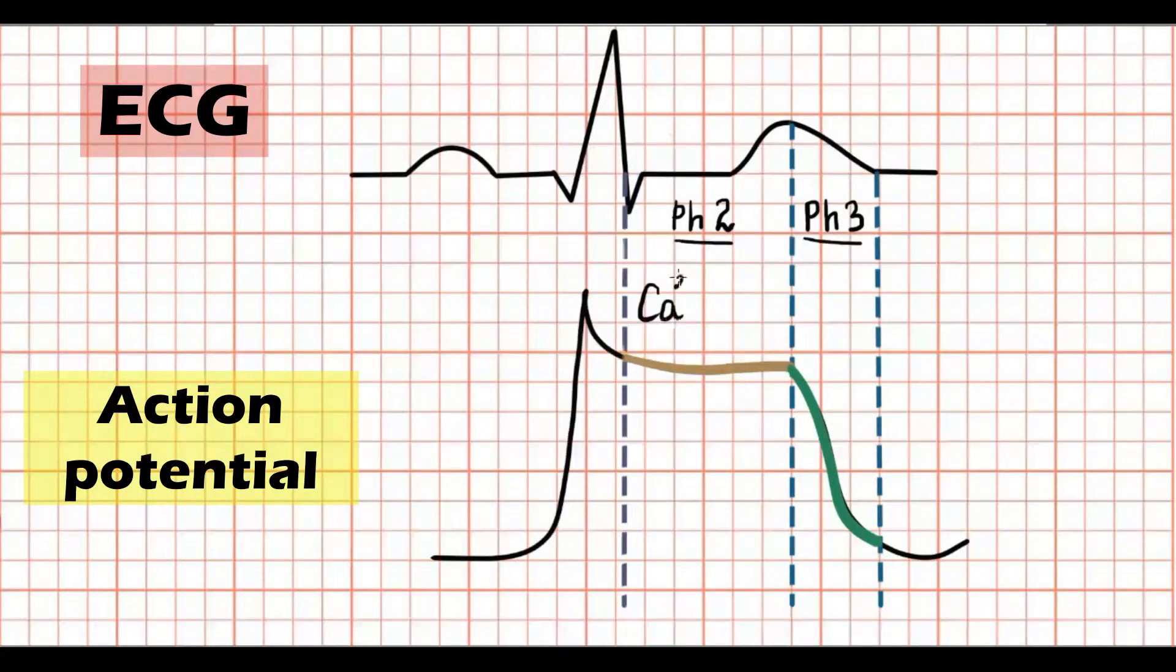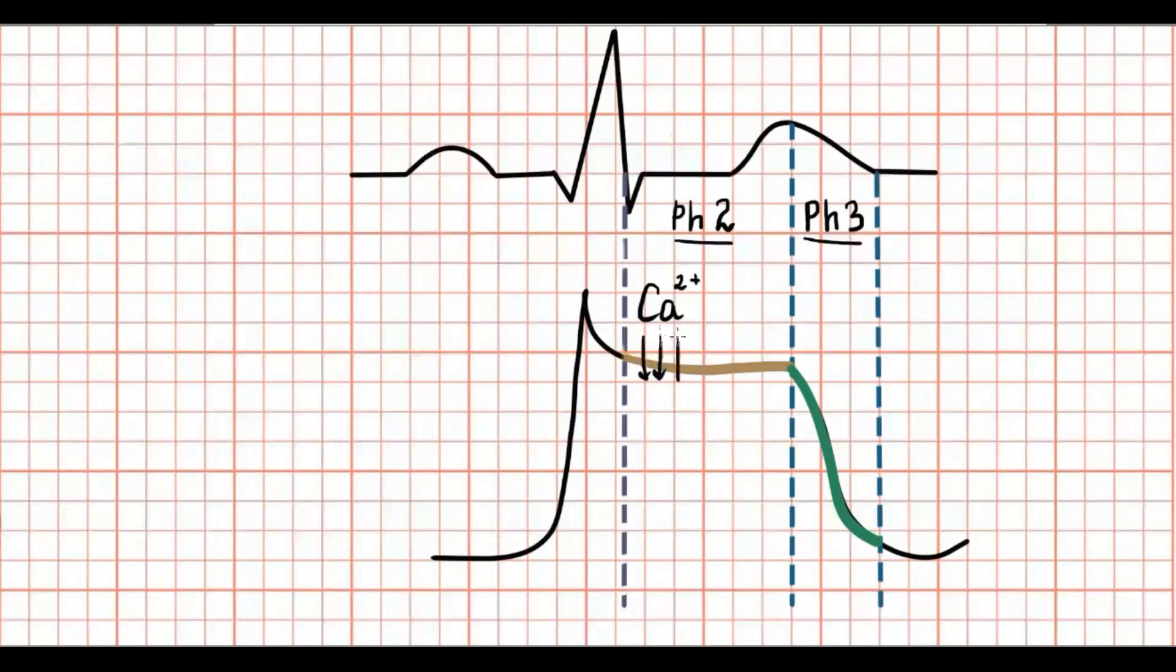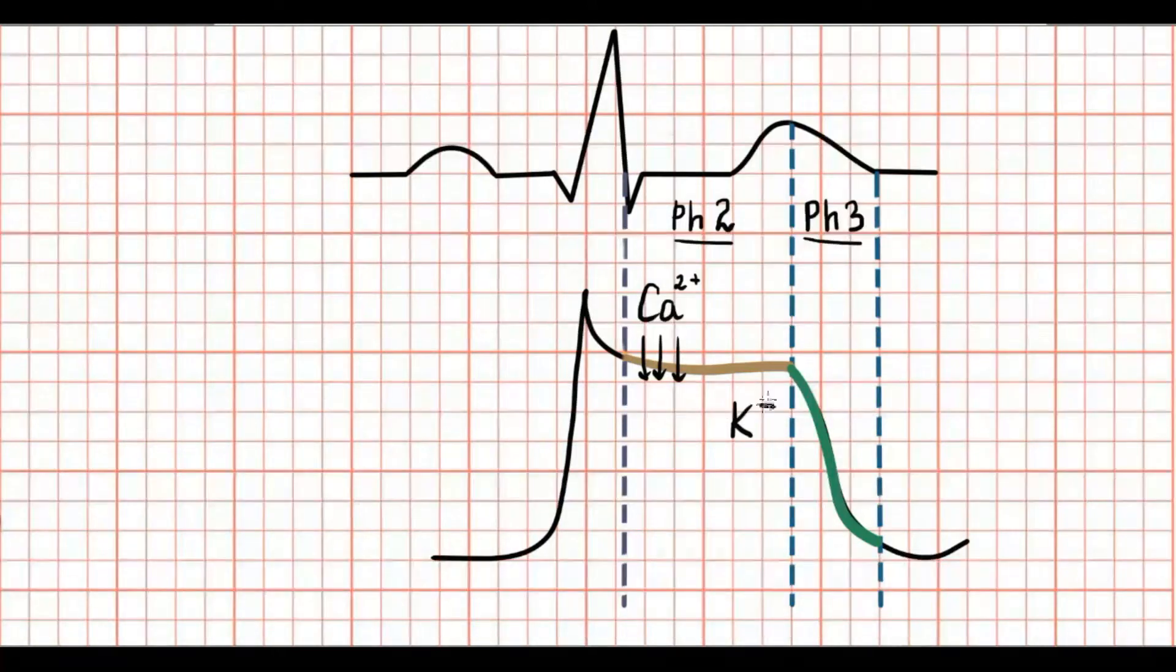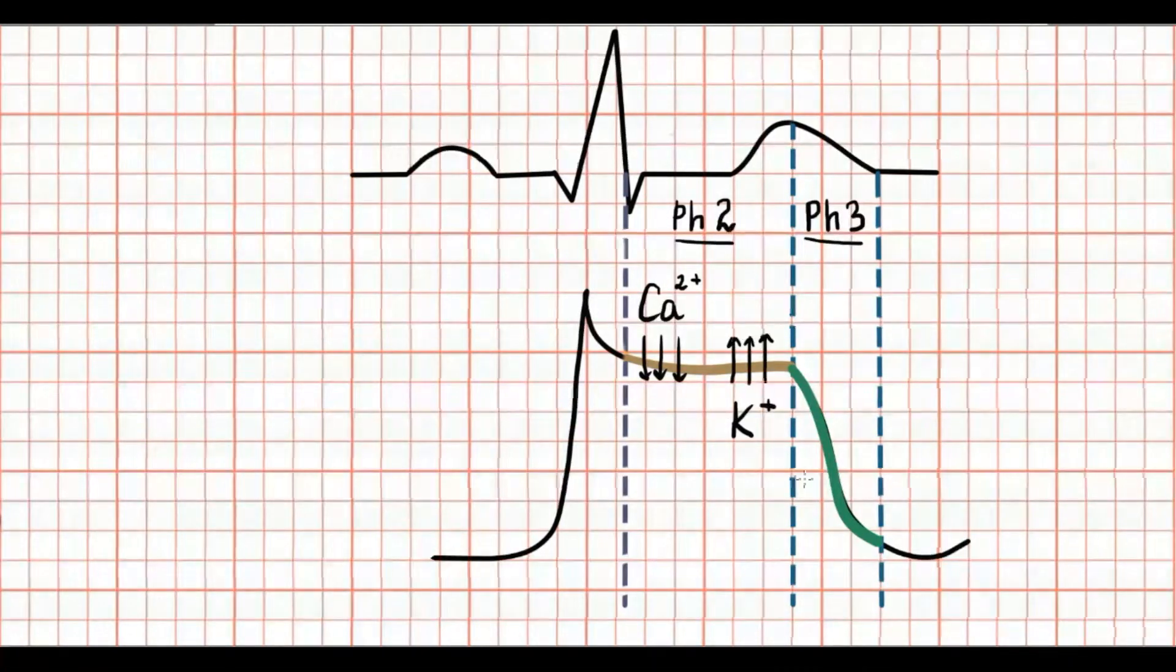During phase 2, L-type calcium channel currents go inside of the cell and play the dominant role. Also, potassium current goes outside the cell in this phase.